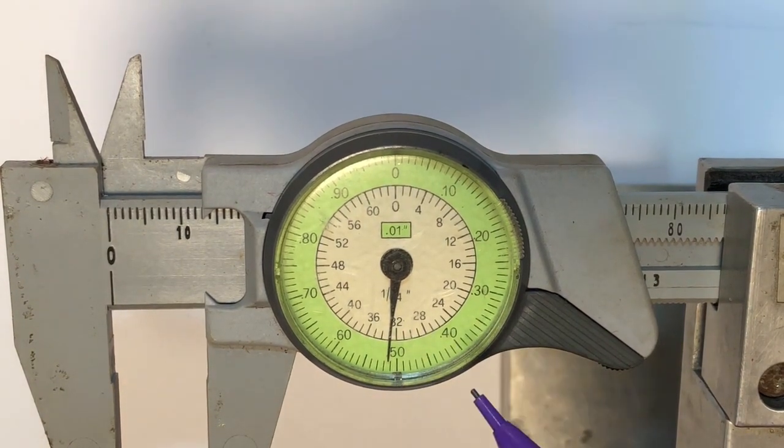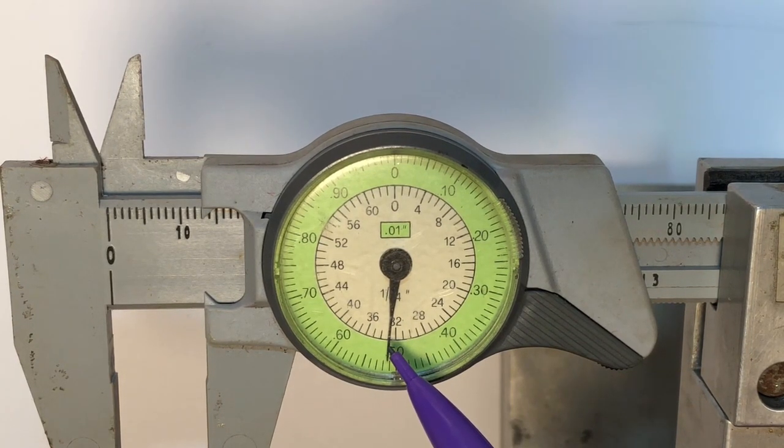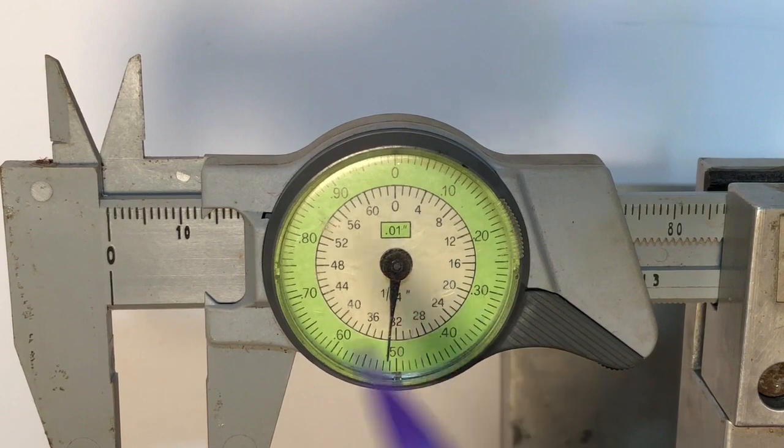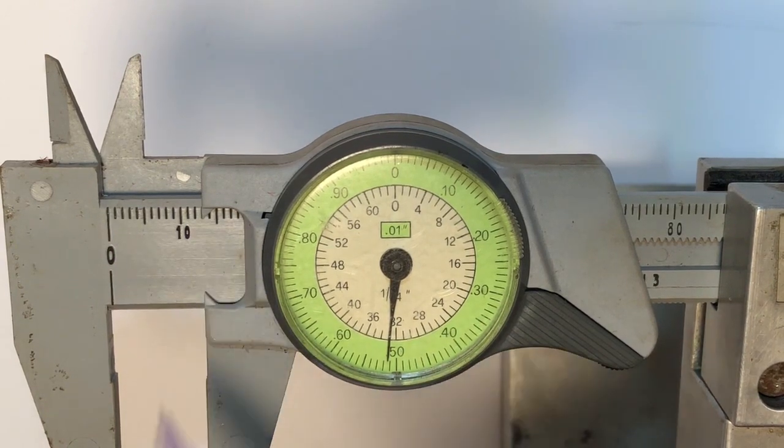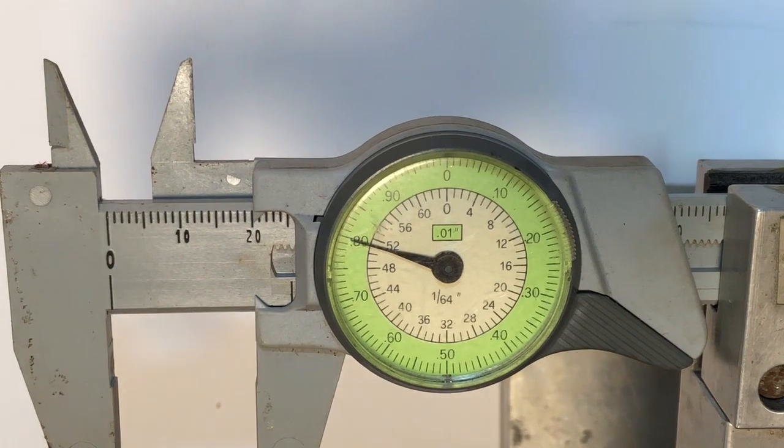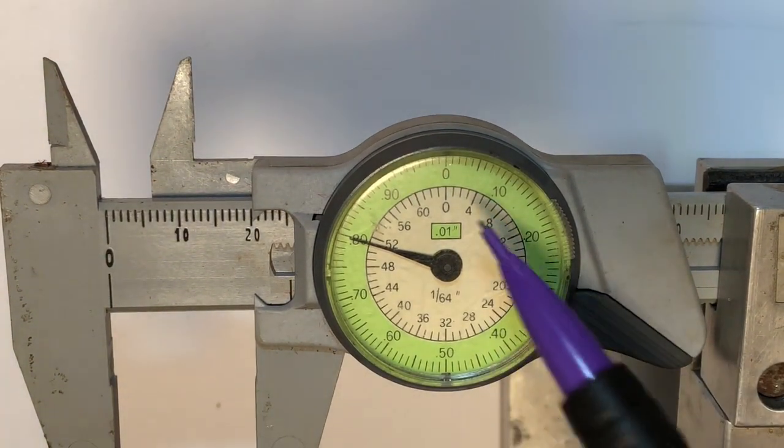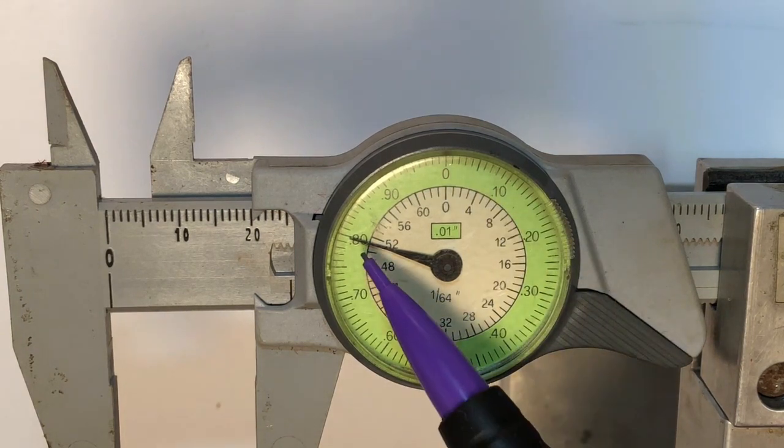We're also going to say that we are at 33/64 and then if we look over here we're also going to say that we're at about 13 millimeter. So let's take a look here, we are at 100, 200, 800 thou.